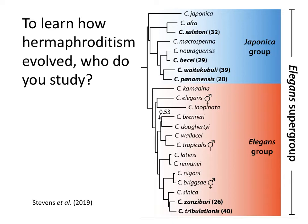Both C. elegans and C. briggsae evolved hermaphroditism, and at least part of that process involved each species separately coming up with different, newly evolved genes — not orthologues, totally different novel genes — but both interact with this core conserved pathway at the same point: regulating whether or not tra-2 is active. This is why people got really excited about studying hermaphroditism in Caenorhabditis — it seemed like we'd see multiple independent ways to become hermaphrodite in at least three species.